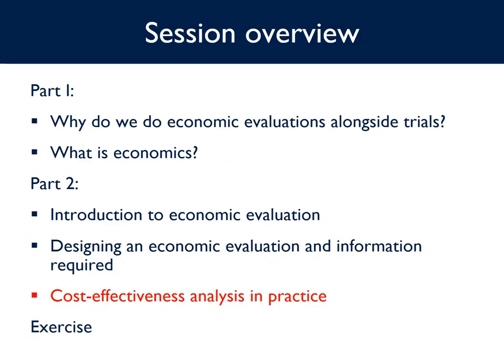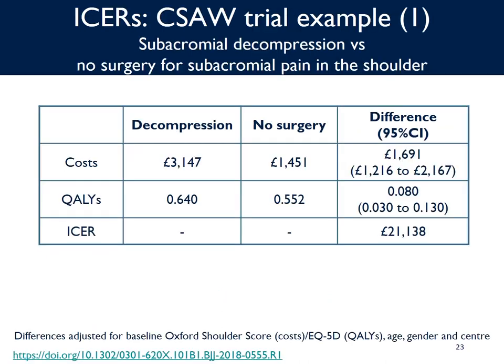In this section we are going to look at cost-effectiveness analysis in practice. The first example is from the CISO trial economic analysis, which compared subacromial decompression versus no surgery for subacromial pain in the shoulder. Decompression was found to be more expensive than no surgery — about £1,691 per patient — but it resulted in higher QALYs, about 0.08 QALYs more per patient compared to no surgery. The ICER is estimated by dividing the difference in costs by the difference in QALYs, estimated at £21,138.